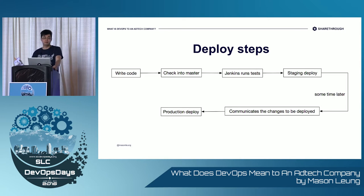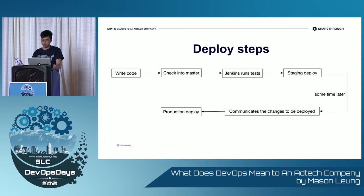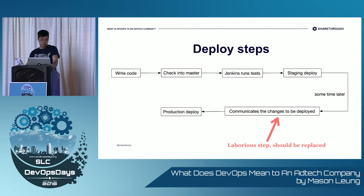Let's take a look at our deploy pipeline. Someone would write code and then that gets checked into master. Then Jenkins runs — if all tasks pass, it deploys to staging. Then sometime later, this could be hours or even days when a feature needs to go live, a developer would identify the changes since last deployed and post them on a Slack channel so others are notified. Then the developer deploys to production from a laptop using Capistrano. Communicating out the changes to be deployed is a laborious step because it involves a lot of copy and paste and bookkeeping from a human. We needed a better way.